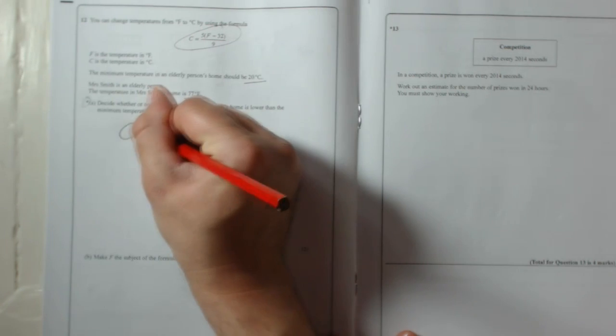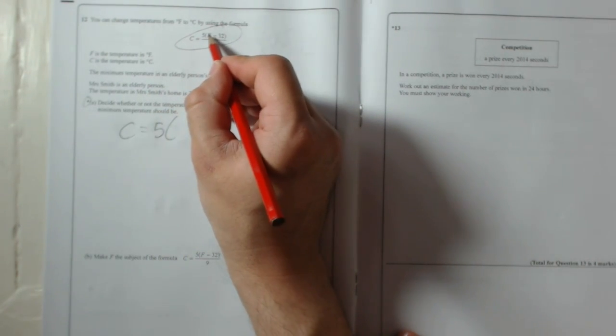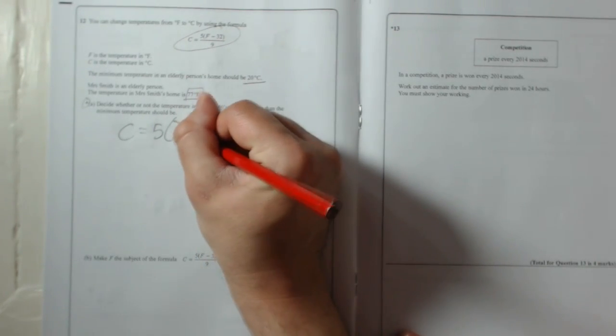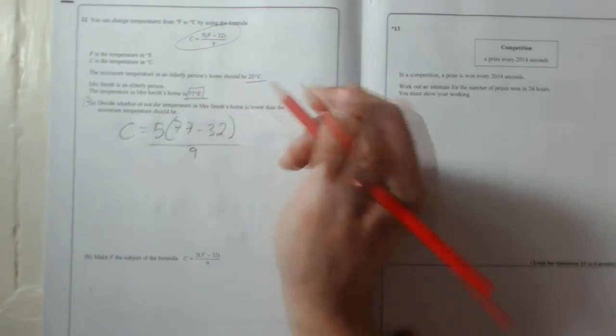So C, Celsius, is equal to 5, open a bracket, now F is the degrees Fahrenheit which we've been given, 77, take away 32, all divided by 9.